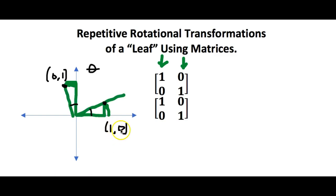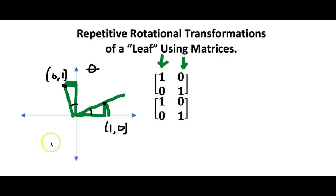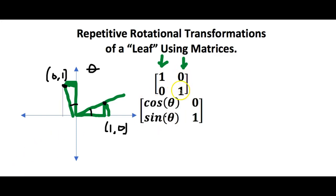For the point (1, 0), I want to move it up by rotating through theta. If I draw my right triangle correctly, I translated by theta, so this is going to be cosine of theta for x and sine of theta for y. So I take (1, 0) and it maps to (cos θ, sin θ).